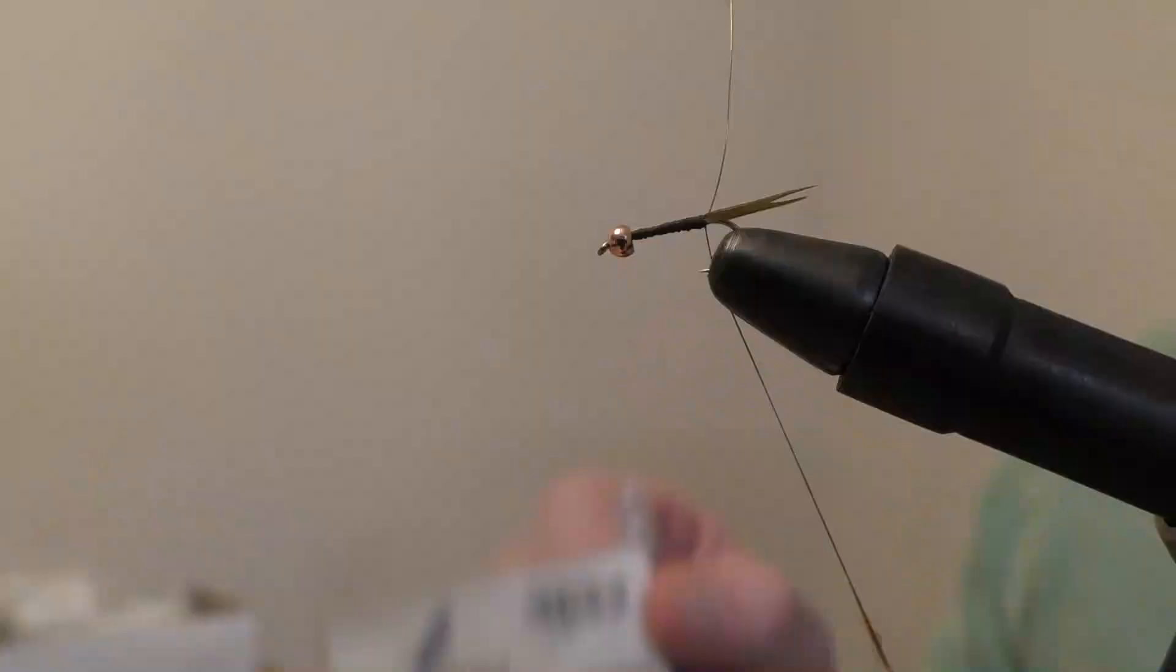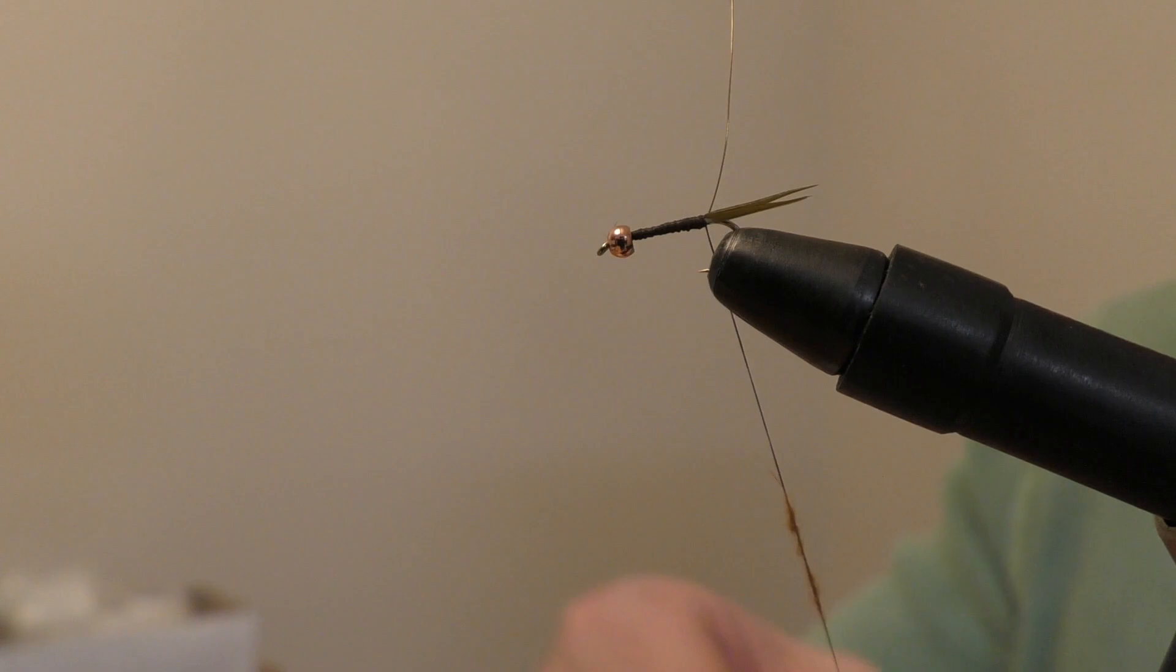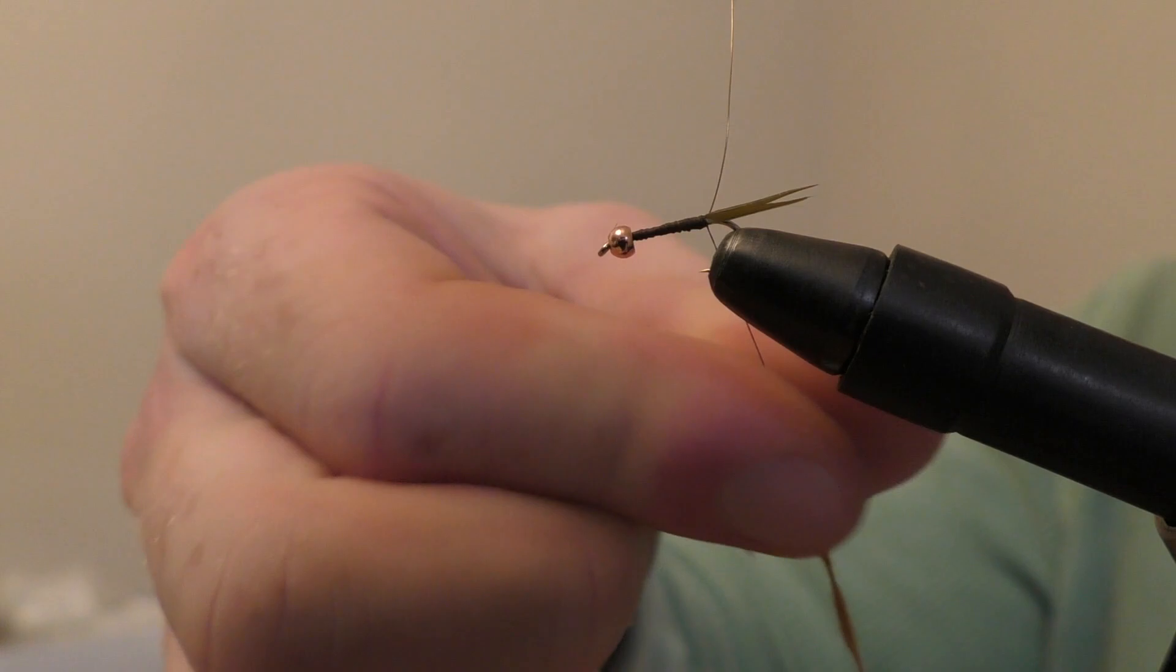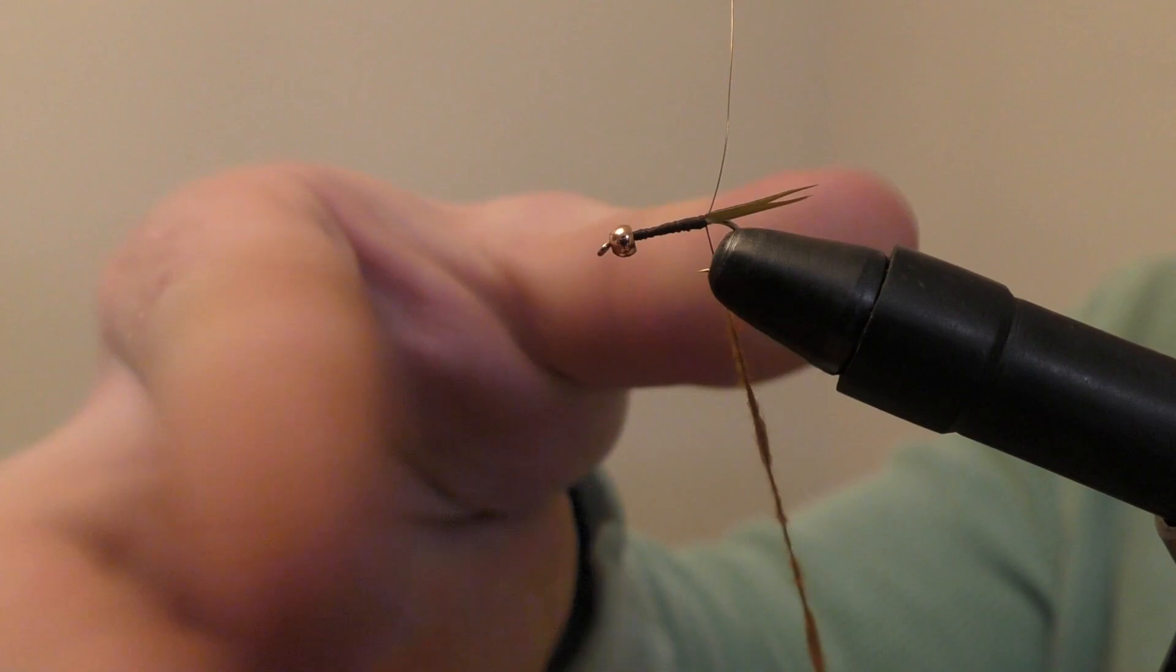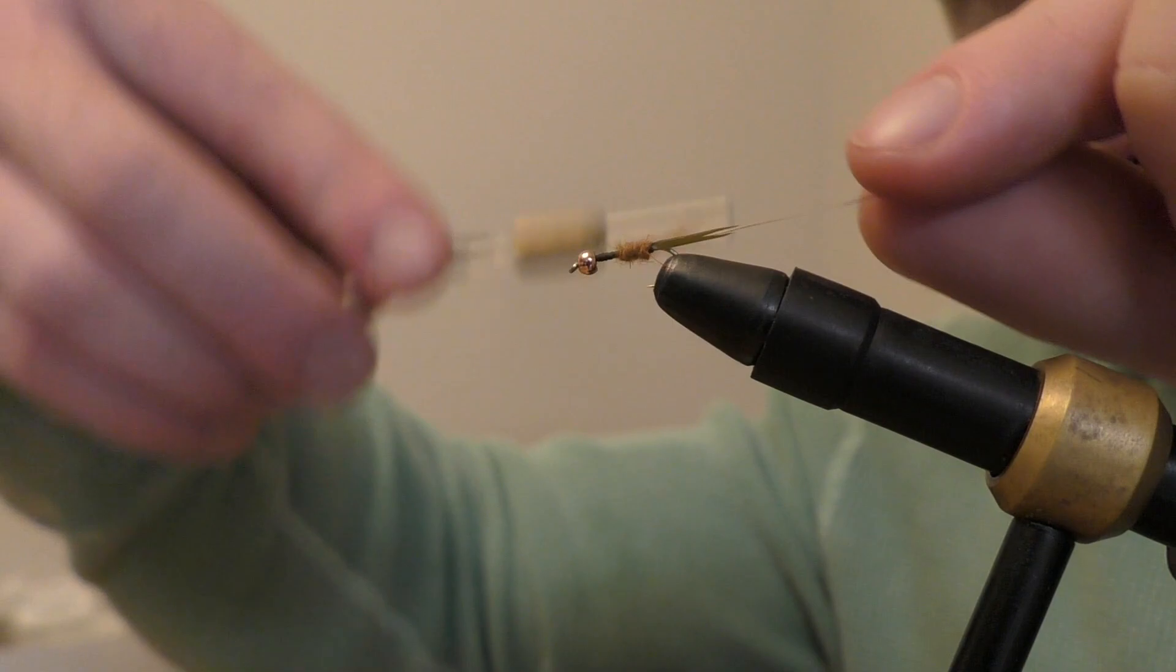Next step: take that golden stone dubbing. Of course you want to make sure you're going nice and light with this stuff. Can't stress how important that is—you want a very very skinny dubbing noodle. You want to just start right at the back of your fly and wrap that forward.